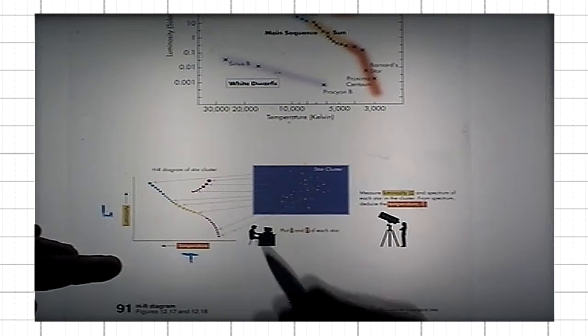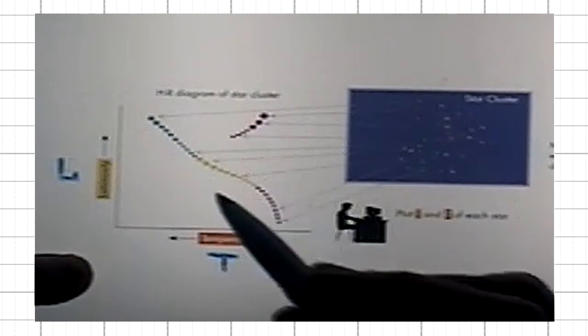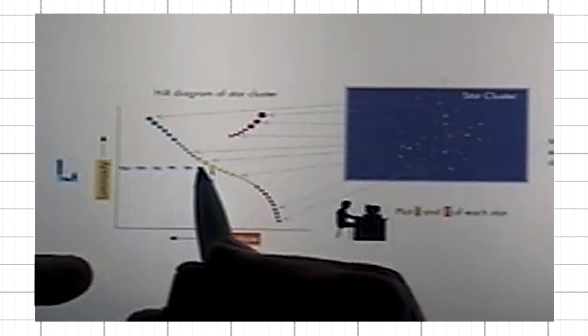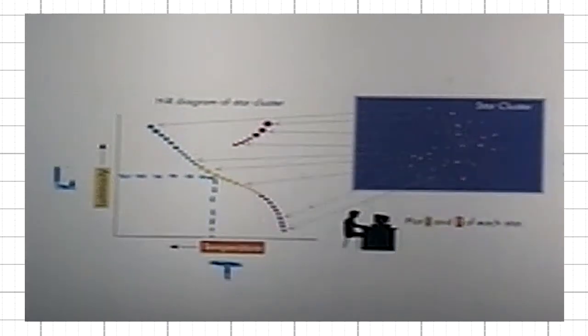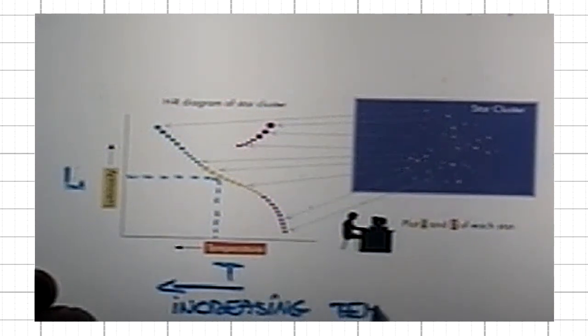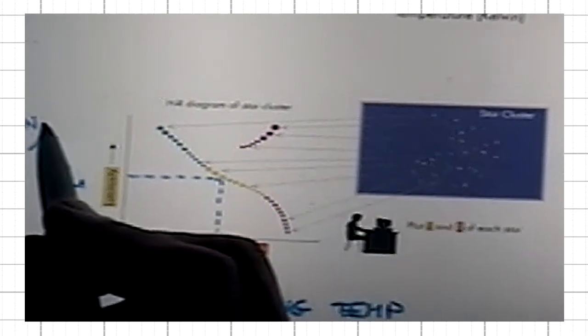You represent each star on this two-dimensional plot by a point. The coordinates of the point are the surface temperature of the star. For this star, this would be the surface temperature and this would be the luminosity. You do that for every star in the cluster. Note that for historical reasons, the temperature is increasing in this direction, and luminosity is increasing as usual, up.